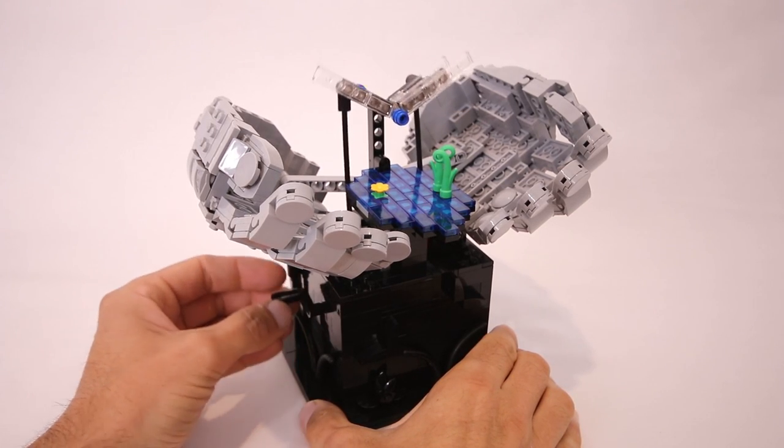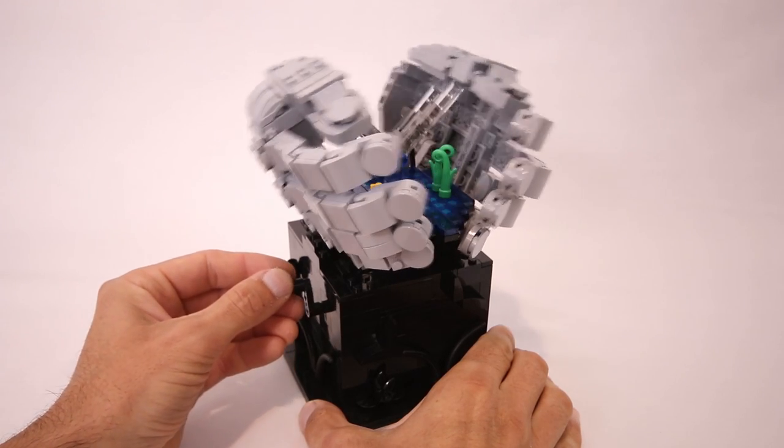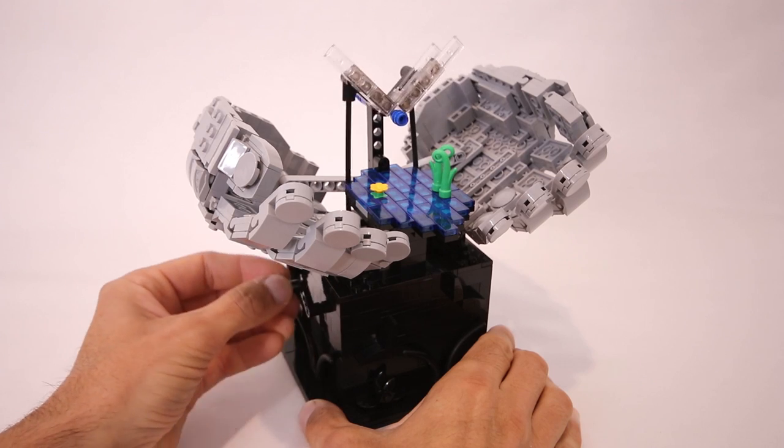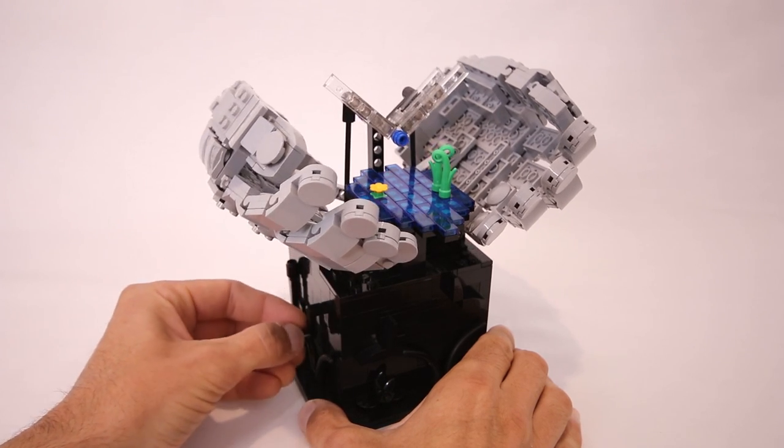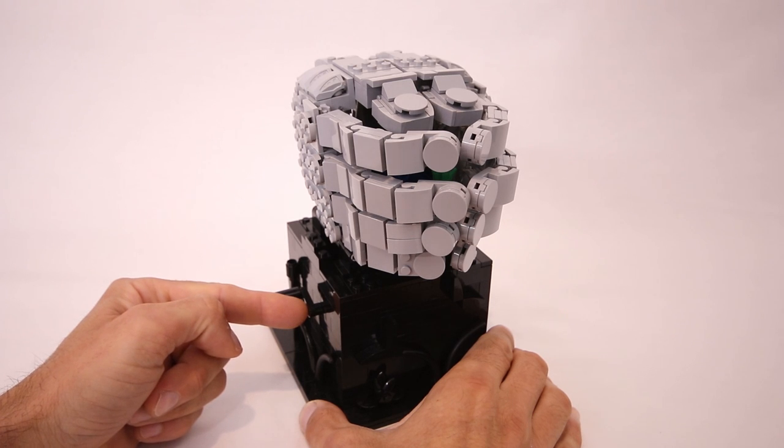And the other is all of the mechanics behind the motion, which includes the opening of the hands, the lifting of the dragonfly, the flapping of its wings, and the closing of everything back up, all driven through this single crankshaft on the side of the base.